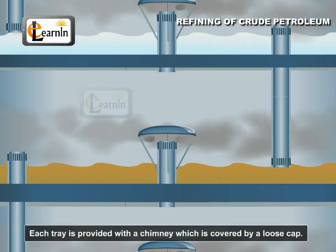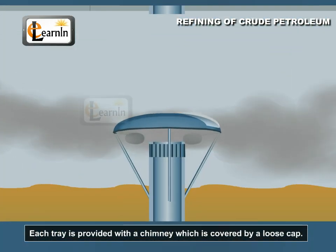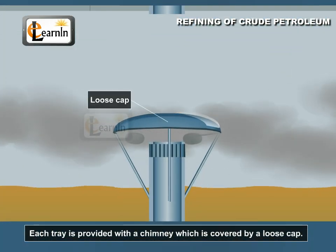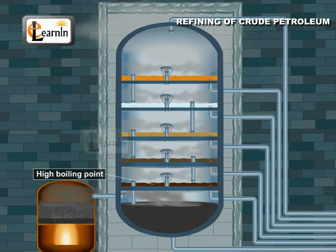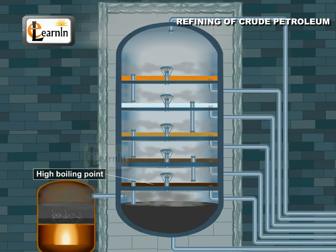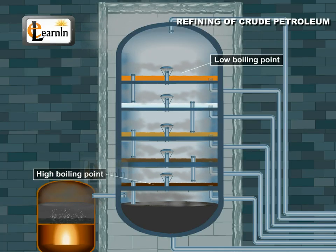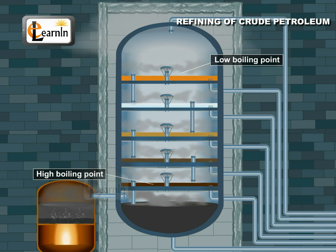Each tray is provided with a chimney which is covered by a loose cap. Fractions having too high boiling points condense first at the lower trays, and fractions having low boiling points condense at the higher trays.